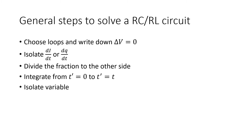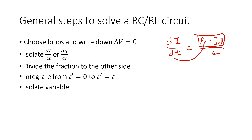For both RC and RL circuits — whether charging or discharging — there's a general method. First, choose your loop (usually just one loop because of a switch) and write down all circuit elements with their voltage drops, which must sum to zero. Then determine what you're solving for: if there's a capacitor you're solving for q, so the variable is dq/dt; if there's only an inductor, you're solving for i as di/dt. Then isolate di/dt or dq/dt, and divide to separate variables.